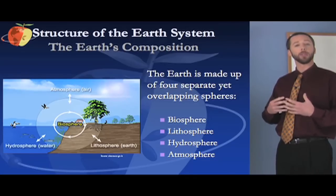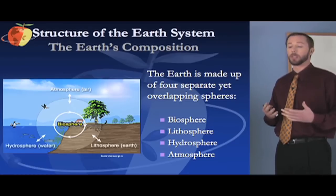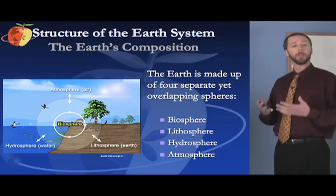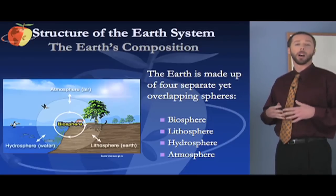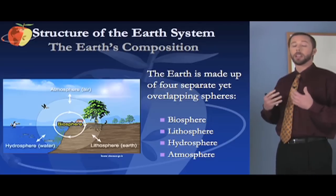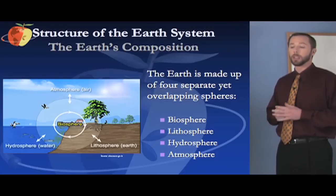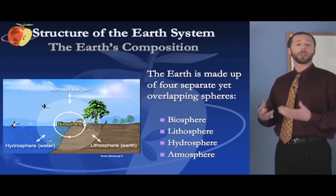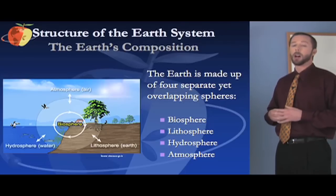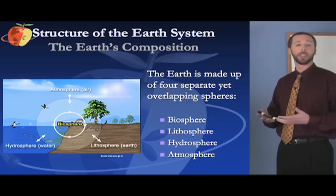A lot of animals live in just one of those spheres, but a lot of animals also live in two or sometimes even three of those spheres. For example, some animals like fish live exclusively in the hydrosphere. But other marine animals like whales or dolphins live in the hydrosphere predominantly, but they have to utilize the atmosphere to breathe, so they'll come to the surface frequently. Something like a tree may have its roots in the lithosphere and extract things like water and minerals from there, but it needs the atmosphere to extract carbon dioxide, which is a necessary component to photosynthesis.